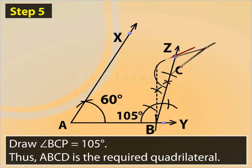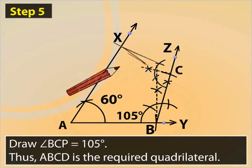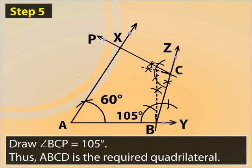Now, draw an angle BCP measuring 105 degrees. Mark the point of intersection of CP and AX as D. Thus, ABCD is the required quadrilateral.